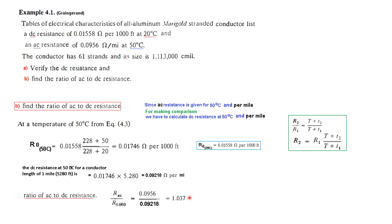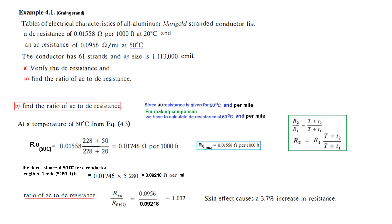A key point to note is that AC resistance is greater than DC resistance, and the reason we discussed is the skin effect. We can conclude that AC resistance is always higher than DC resistance due to the skin effect.